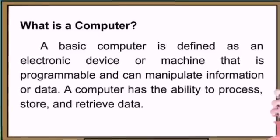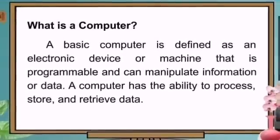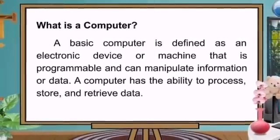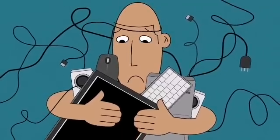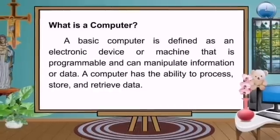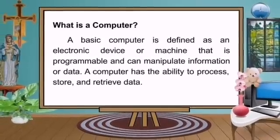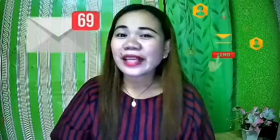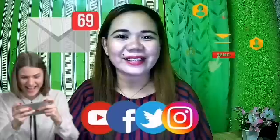Let's find out more about computer and internet. What is a computer? A basic computer is defined as an electronic device or machine that is programmable and can manipulate information or data. A computer has the ability to process, store, and retrieve data. It also has the ability to perform different tasks depending on the programs and applications. Our basic understanding of computer is that we can type documents, send emails, download and play games online, use it to access the internet, and use it to communicate with others through social media.